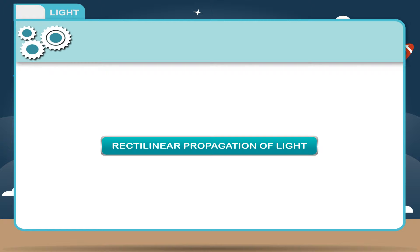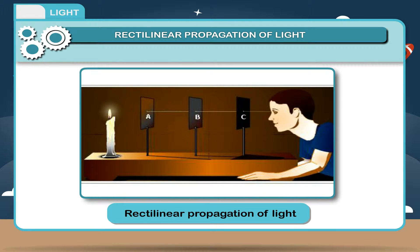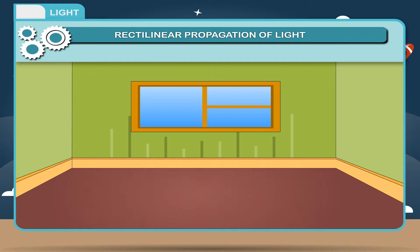Rectilinear Propagation of Light. The property of light when it travels in a straight line in a medium is called rectilinear propagation of light. The light thrown from the torch appears to travel in a straight line before it falls on the wall. Similarly, light seems to be traveling in a straight line when a beam of sunlight enters a dark room through a small hole.